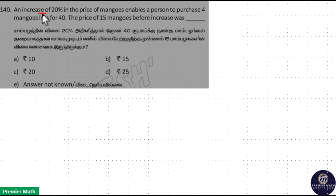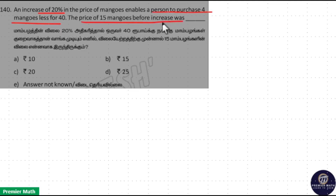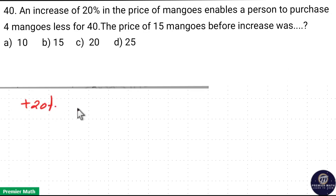An increase of 20% in the price of mangoes enables a person to purchase 4 mangoes less for ₹40. The price of 15 mangoes before the increase was to be found. This increment of 20% in price leads to 4 fewer mangoes being purchased.